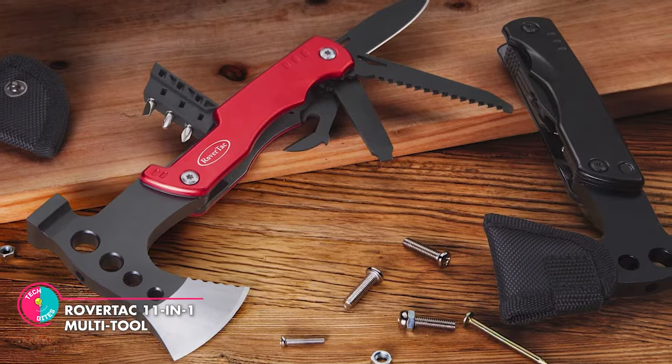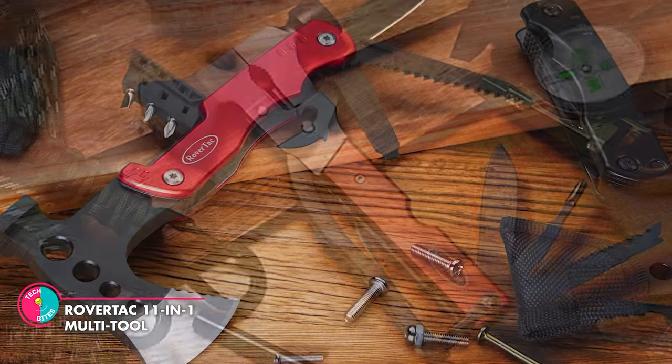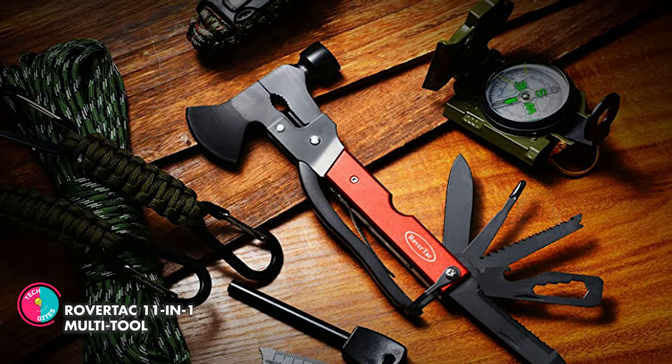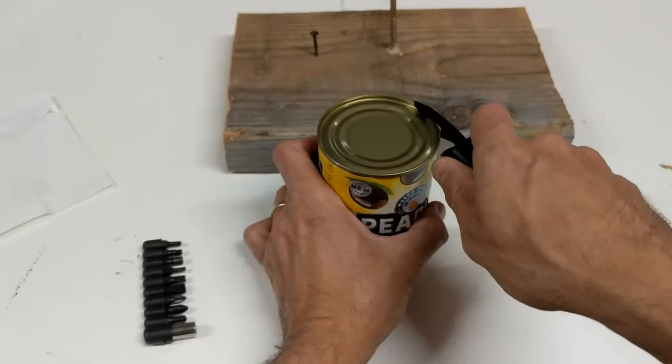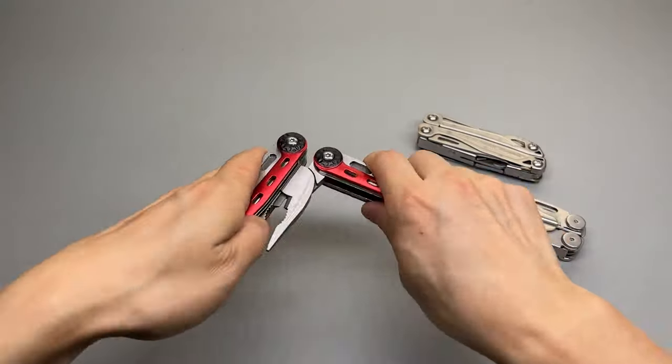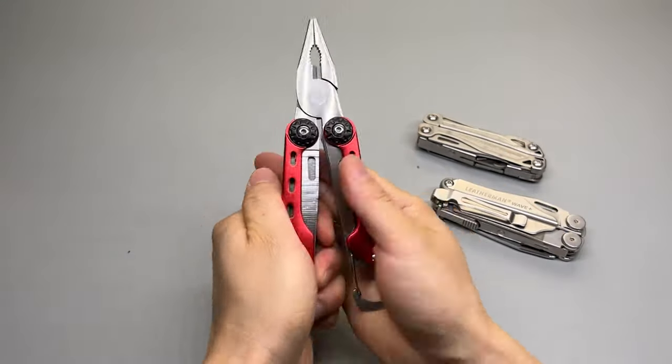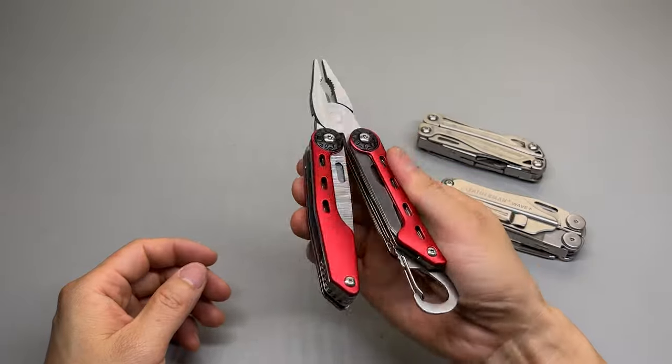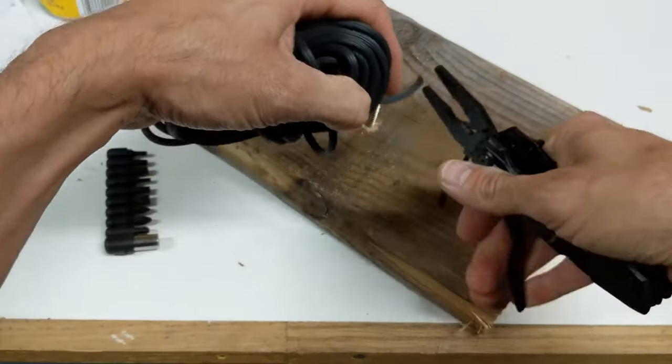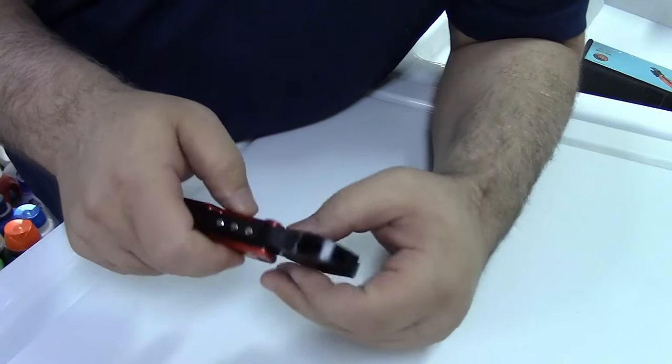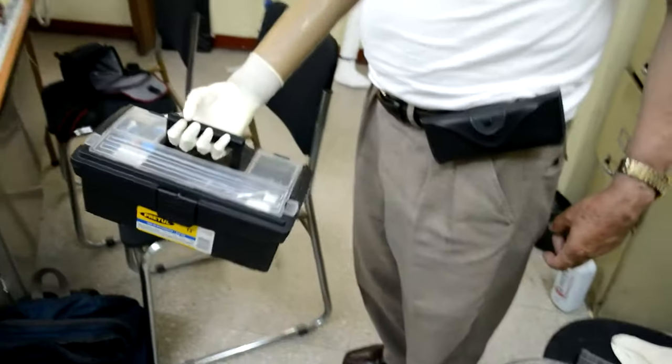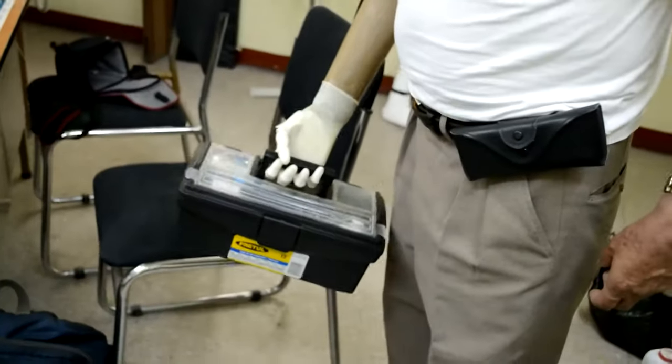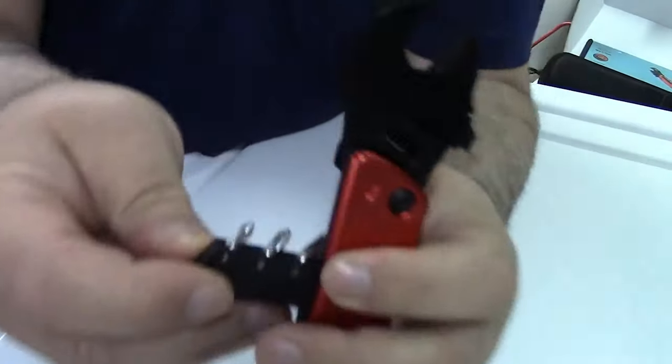Rover TAC 11-in-1 multi-tool. Not one, not two, but 11 different tools are included in this multi-tool. It has a hatchet, saw, hammer, knife, many screwdriver bits, a can and bottle opener, a file and more. This versatile tool packs a powerful punch and is capable of handling various tasks such as car repairs, cutting, chopping, prying, twisting screws and even sawing wood. Say goodbye to the hassle of carrying a bulky toolbox and say hello to the convenience of having everything you need in one compact and durable device.